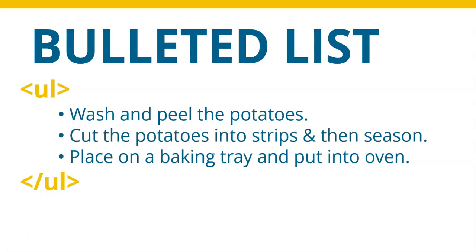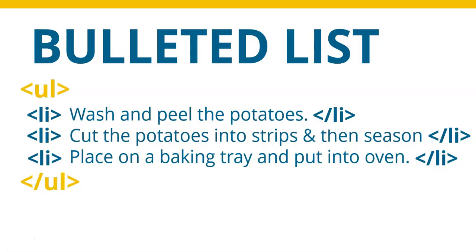Now, HTML doesn't know when to put the bullet or when the bullet ends. It doesn't know that the word 'wash' must have a bullet in front of it and the next one is the word 'cut'. We need another tag, which is called the list item tag, or LI tag, and that specifies where the bullet will start. Then that bullet will end when we close the list item there at the end of the word 'potatoes'. So that's the start of the bullet, and the close LI is where we end the bullet.